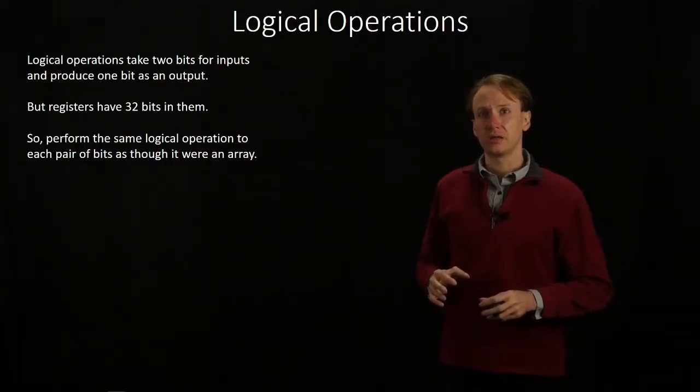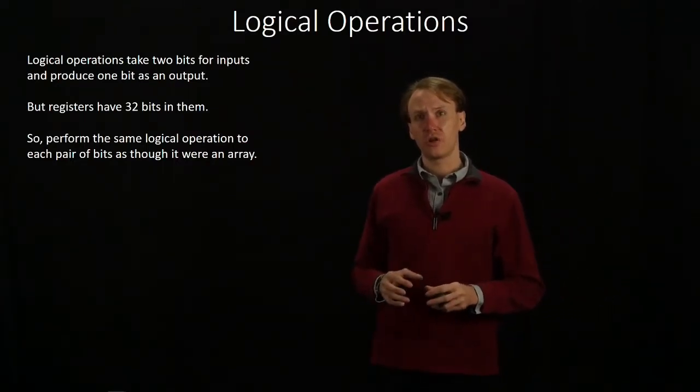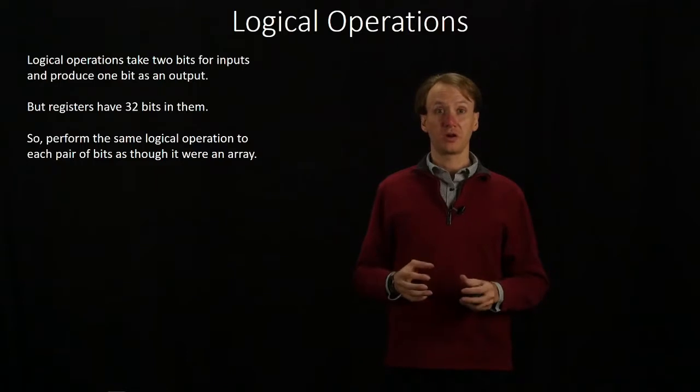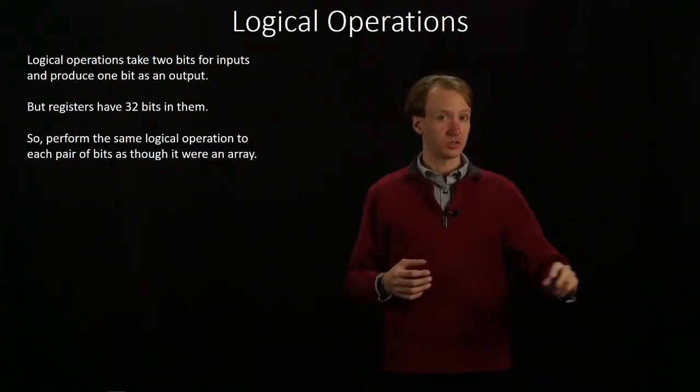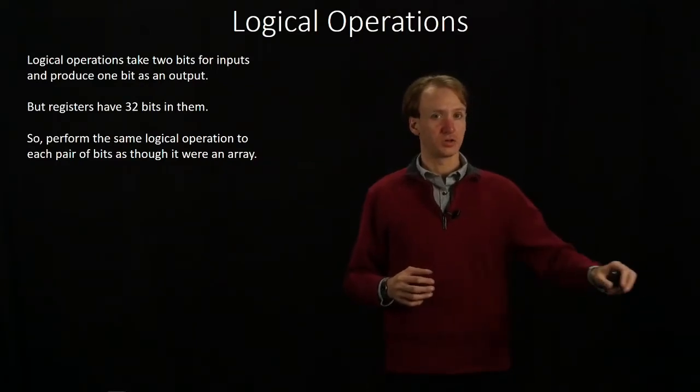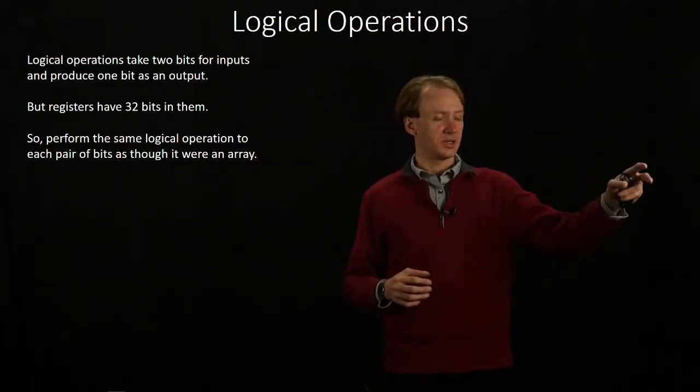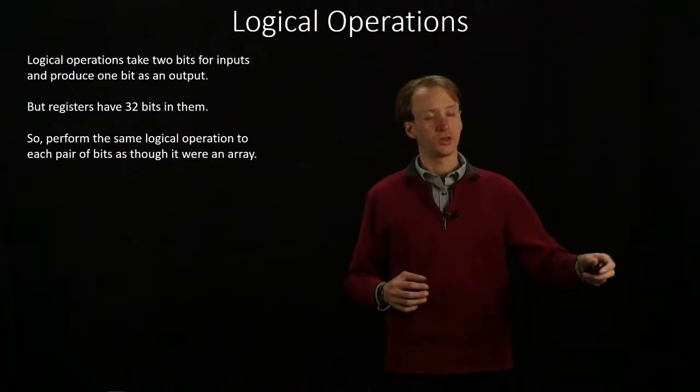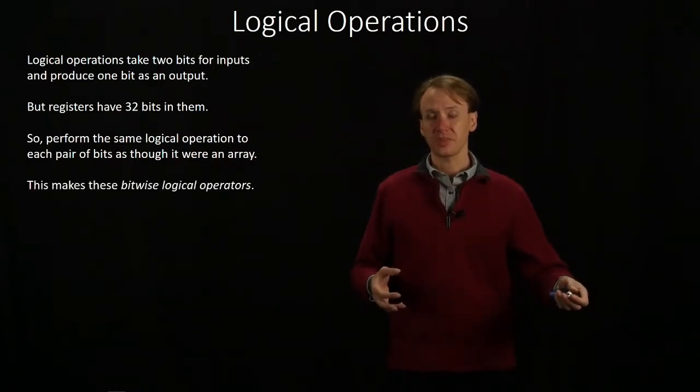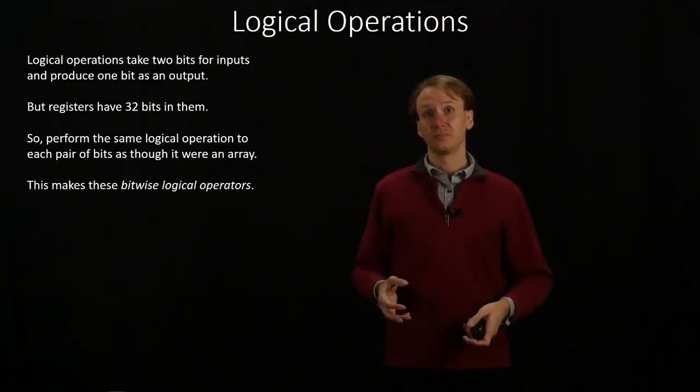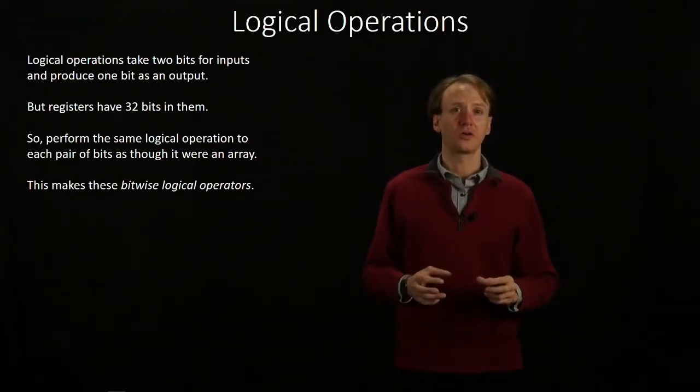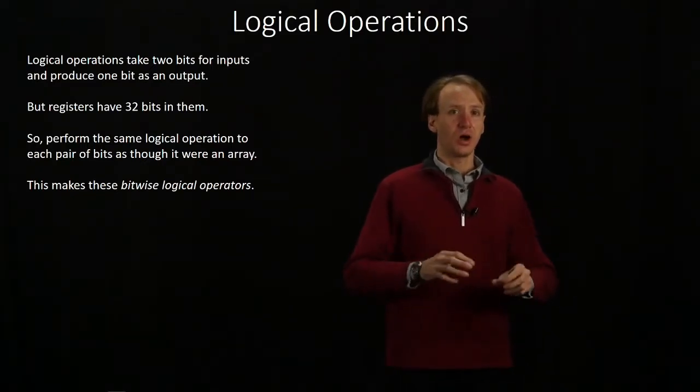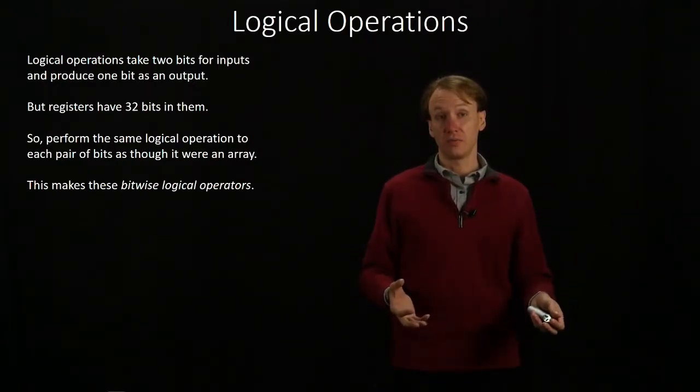What we're going to do instead is perform the same logical operation to each pair of bits. We'll compare the first two bits in each of our sources and produce a result bit. That will be the first result bit. Then we'd compare the next pair of bits and produce another result bit. That will make these bitwise logical operations. They're only looking at one pair of bits at a time. They're not doing something global over the entire number.